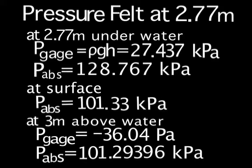At 3 meters above the water, the gauge pressure is 36.04 pascals because the only thing above you is a column of air. The absolute pressure was 101.3 kilopascals. There is a drastic difference between the pressure underwater than the pressure in air because water obviously weighs more than air. This is quite evident by the numbers that you see.